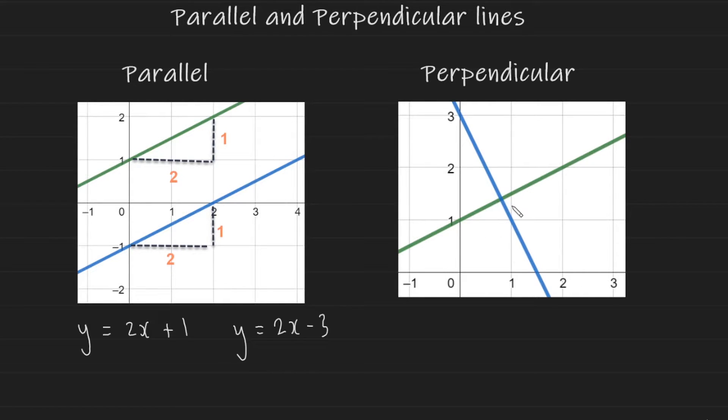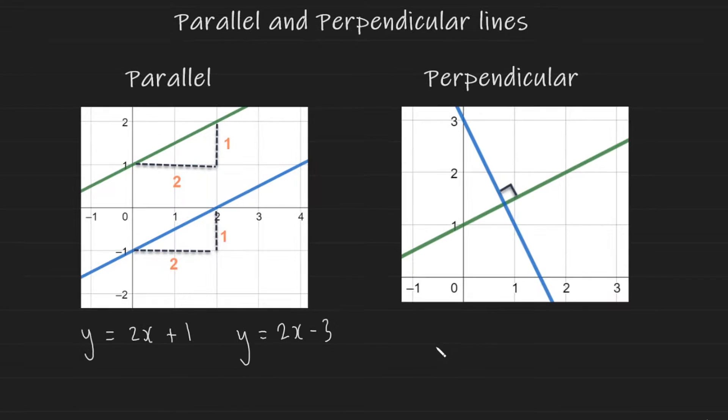Now let's take a look at perpendicular lines. Two lines are said to be perpendicular if they cross each other at 90 degrees, like in the image to the right here. So what does this mean for the equations of two lines that are perpendicular? Well, if one line has an equation y equals 2x plus 1, then a line perpendicular to it will have the equation y equals minus 1 over 2x minus 2.